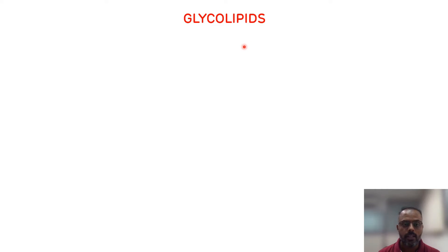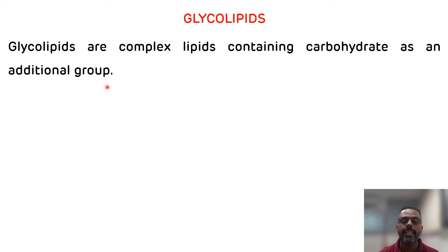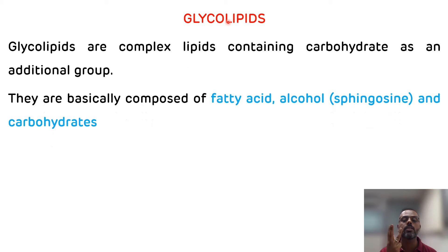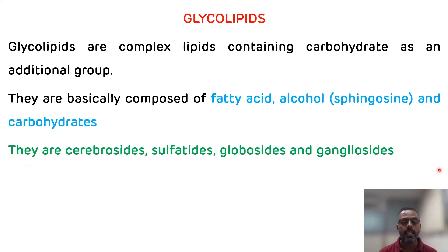Glycolipids are the complex lipids which contain carbohydrate as an additional group. As the name suggests, 'glyco' means carbohydrate. They are basically composed of fatty acid, an alcohol — in which there is sphingosine — and carbohydrate. Depending upon the presence of carbohydrates they are further classified. The examples of glycolipids are cerebrosides, sulfatides, globosides, and gangliosides.